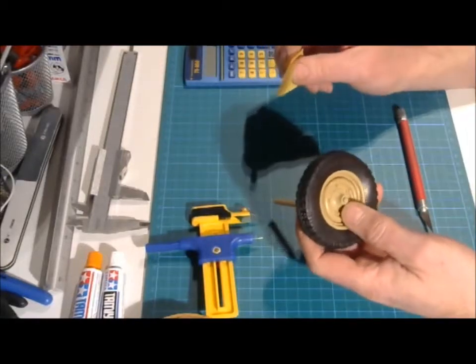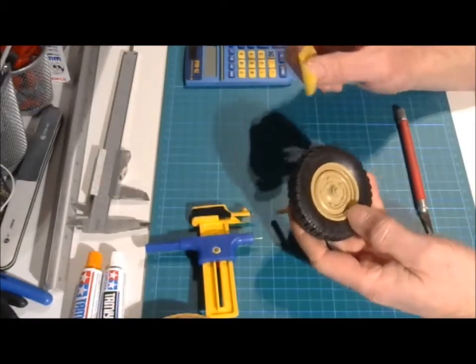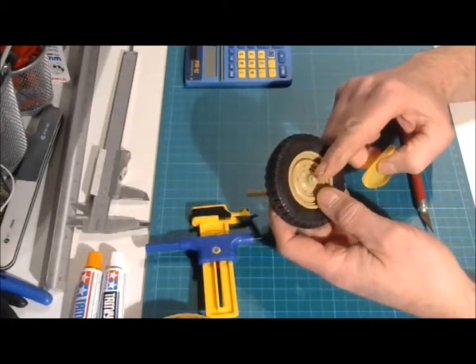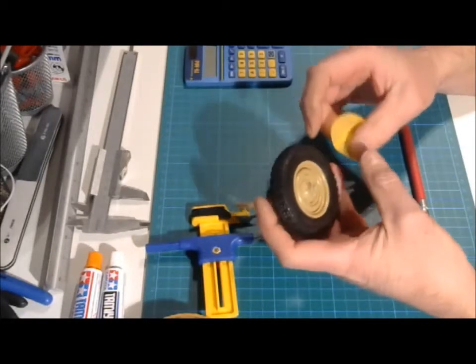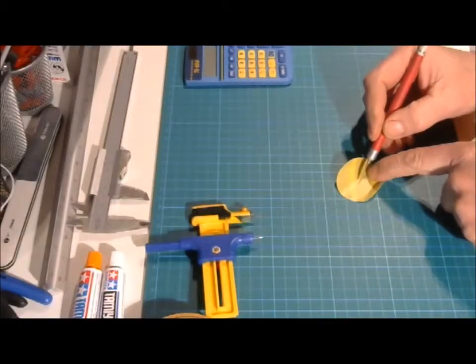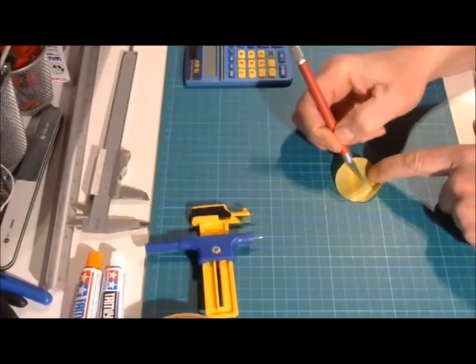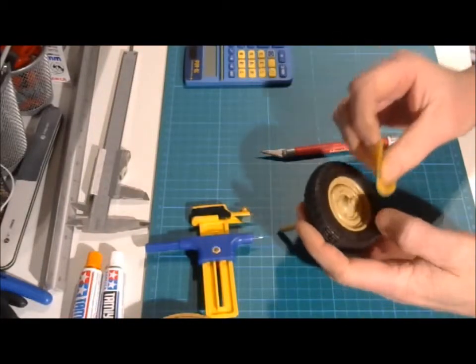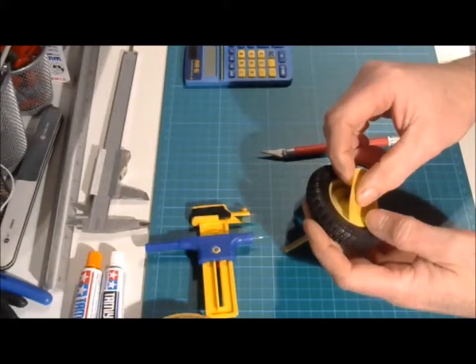Now here on this wheel we have a problem because the center line in this is raised quite high. That means that we have to make a cross section in this one. Like this. And then we have to mount it onto the hubcap.